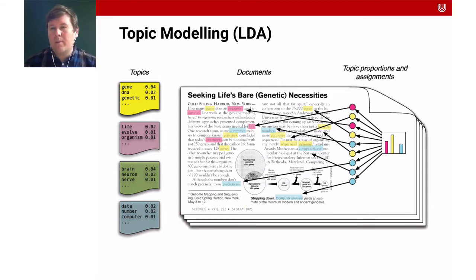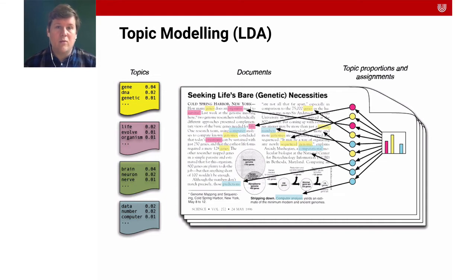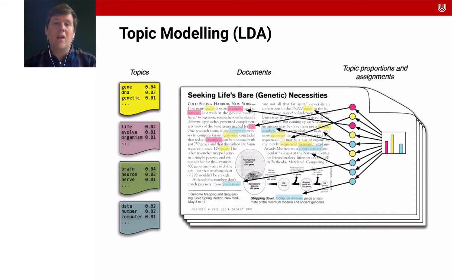The idea is to detect topics in sentences, and the model basically makes two assumptions. It regards a topic as a probability distribution over words — as you can see here on the left, words like gene, genetic, and DNA are all related to a topic. And documents are regarded as a probability distribution over topics.